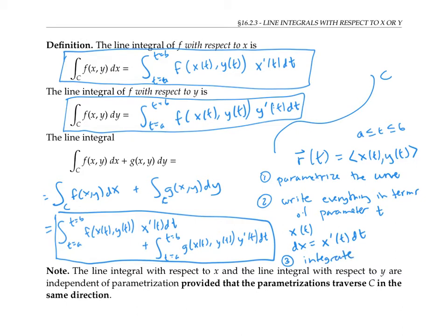Although our first step was to parameterize the curve, there are lots of ways of doing this, and it certainly looks like the integral might depend on the functions we use to parameterize it. It turns out that the line integral with respect to x and the line integral with respect to y are independent of the parameterization. It doesn't matter what parameterization you use, you still get the same answer, provided that the parameterizations traverse C in the same direction.